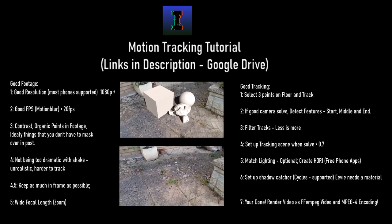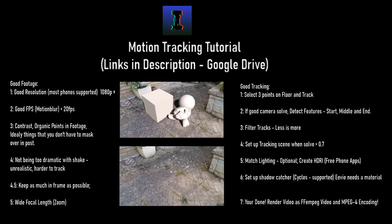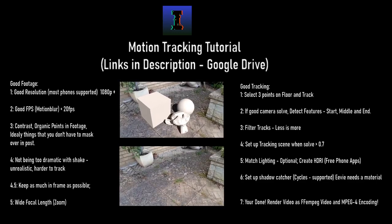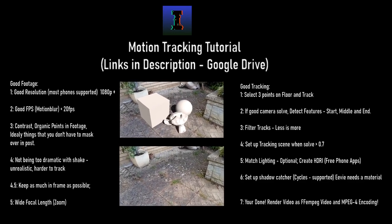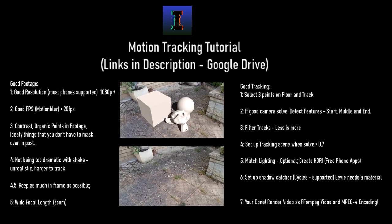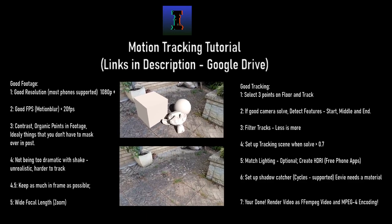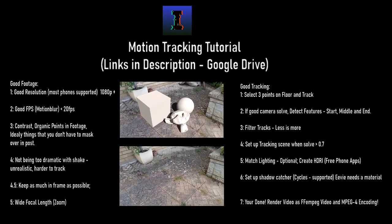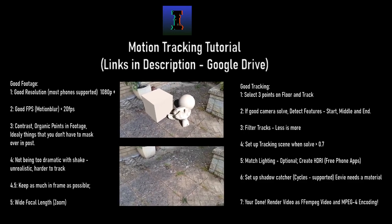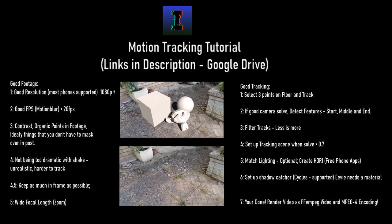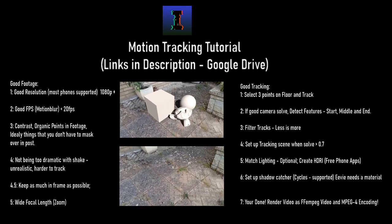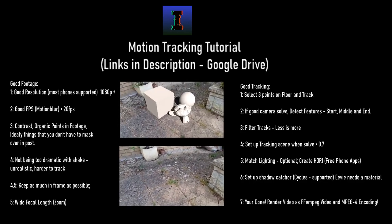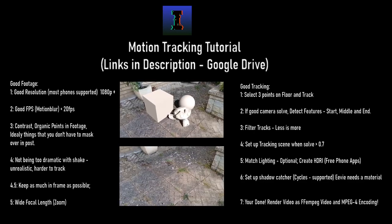Number three is filter tracks — less is more. When I started doing motion tracking I always thought if you had a hundred tracks in your scene you'd obviously get better results, which is obviously not true. Filter tracks is something Blender can do automatically. Once you've got a lot of tracks, you want to filter them with a low threshold and delete the bad ones. Then when you do a solve, the good features stay and you should get a good camera track. You want a solve error of 0.7 or less.